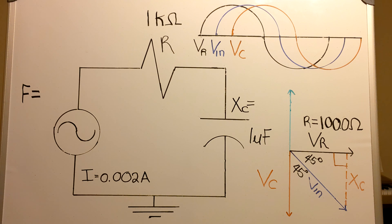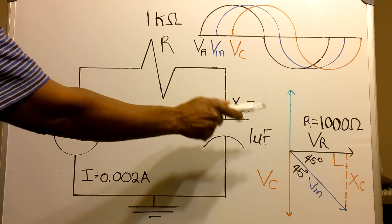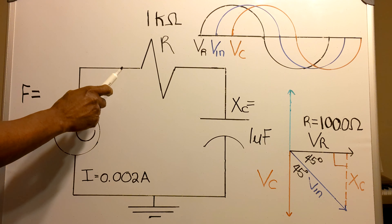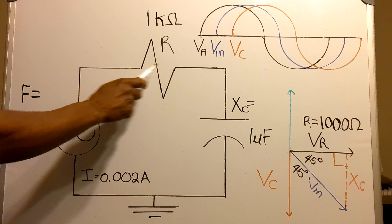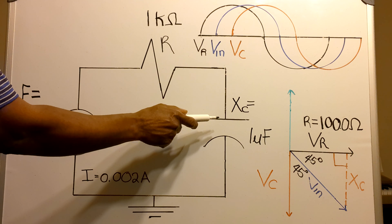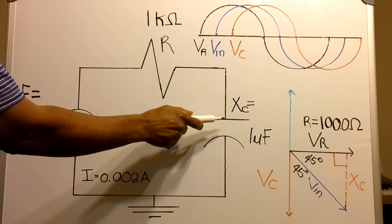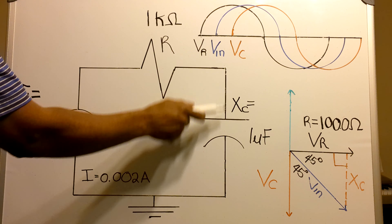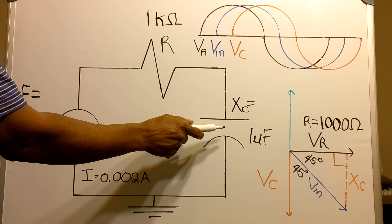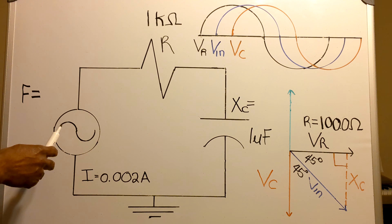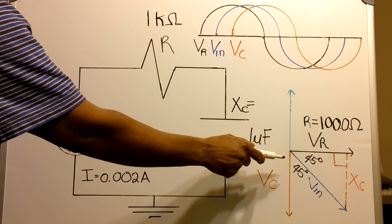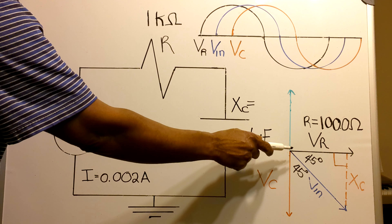In this video I'm going to be evaluating this RC circuit, and I'm going to be using this phasor diagram right here to help me do that. I'm going to be finding the voltage across this resistor, the Xc or the reactance across this capacitor, the voltage across this capacitor, and finally the input voltage and the input frequency.